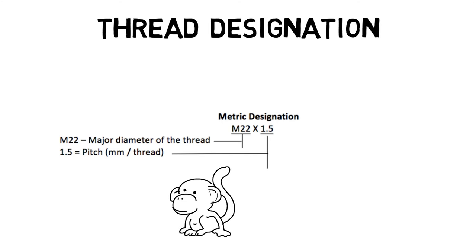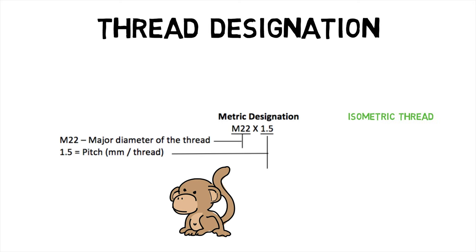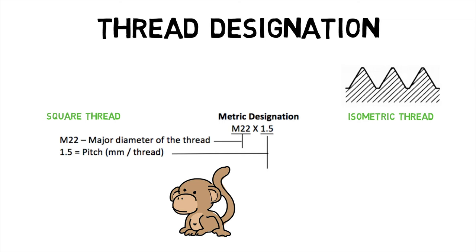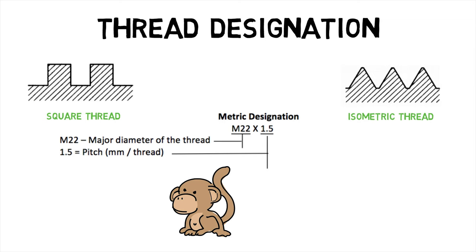Based on their forms, threads are classified as: first, isometric thread, which is used for all general purposes; second, square threads, which is ideal thread for power transmission.